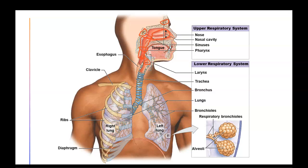The pharynx is simply a shared passageway for air and food. Further down you see the larynx, where the pathway divides. The epiglottis is a flap that closes off the glottis when you swallow food or liquids, preventing substances from entering the airway. Normally the epiglottis is open, and air flows directly through the larynx into the trachea.